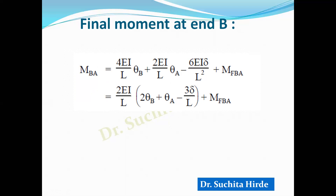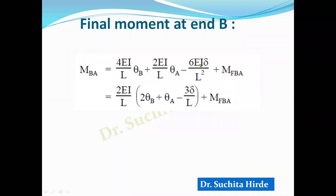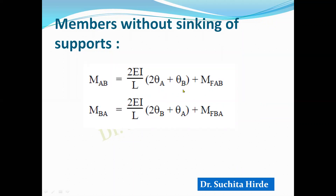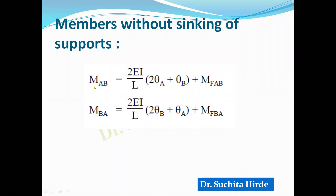If the member has no sinking of support, these equations are modified by neglecting the 3×delta/L term. We get: MAB = (2EI/L)(2×theta A + theta B) + fixed end moment, and similarly for MBA with 2×theta B + theta A.